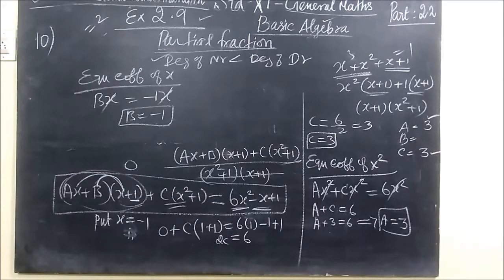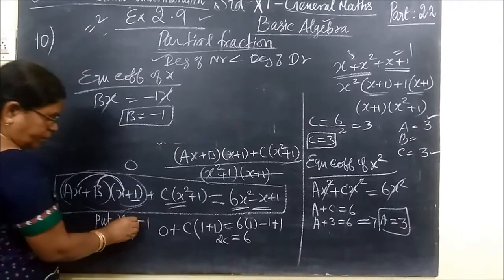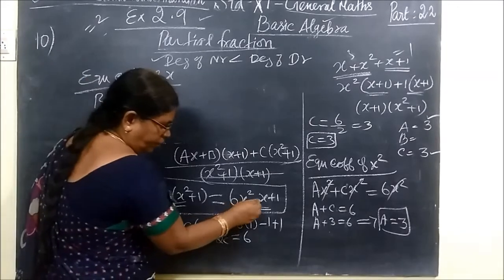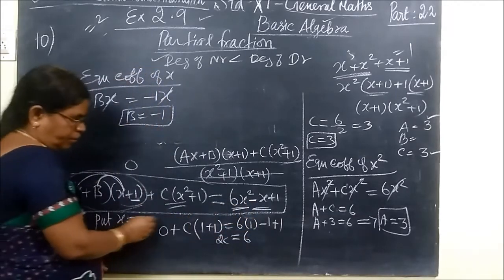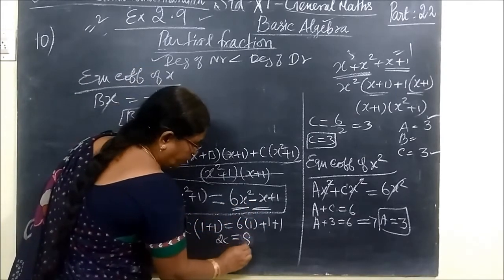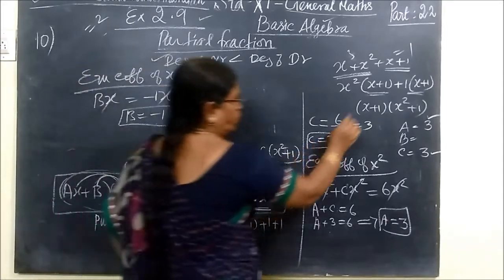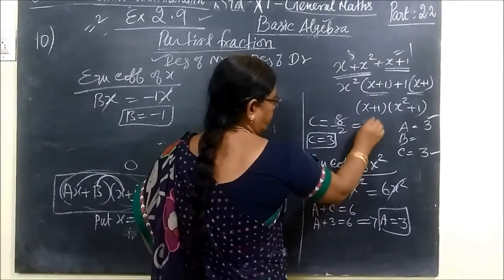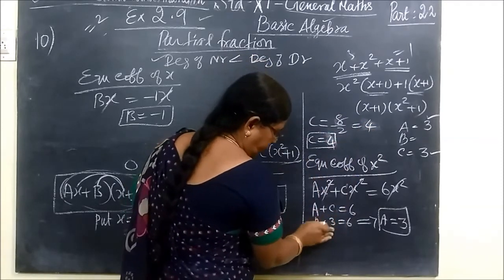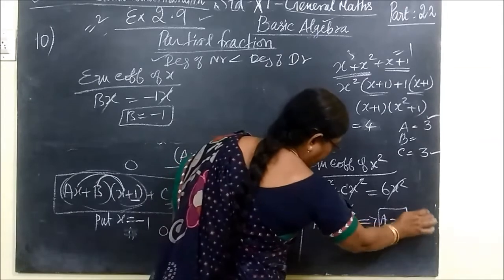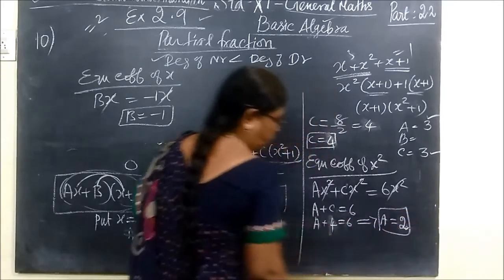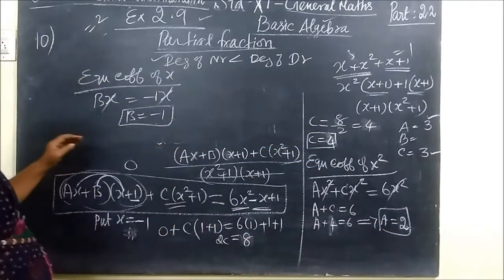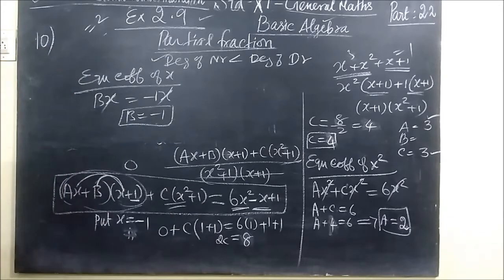Now we get the answer. Here I committed one mistake, that is minus 1 here. Change plus 1, so here 8, which implies C equal to 4, so 8 by 2 this is 4. Then here 6 plus 4, so here also will be changing. Here A equal to 2, C equal to 4, then B equal to minus 1.